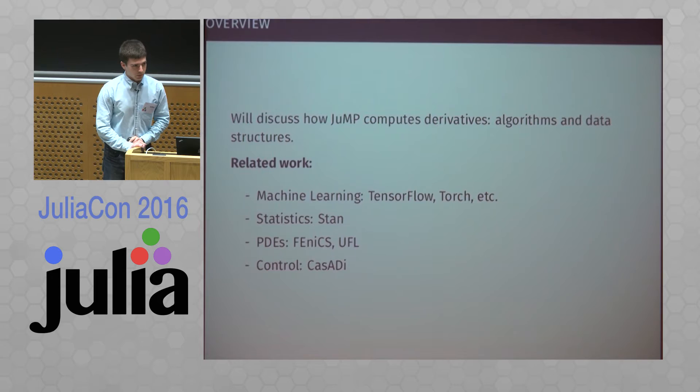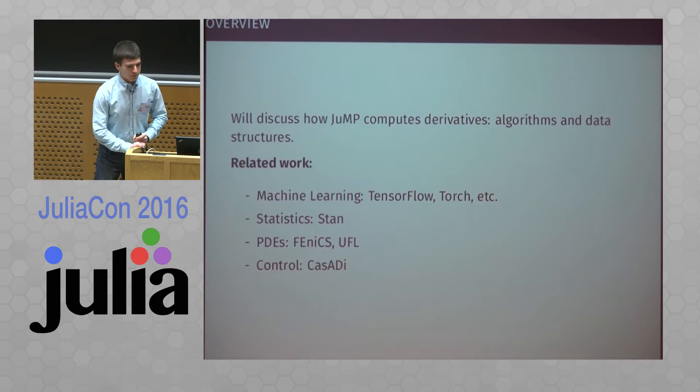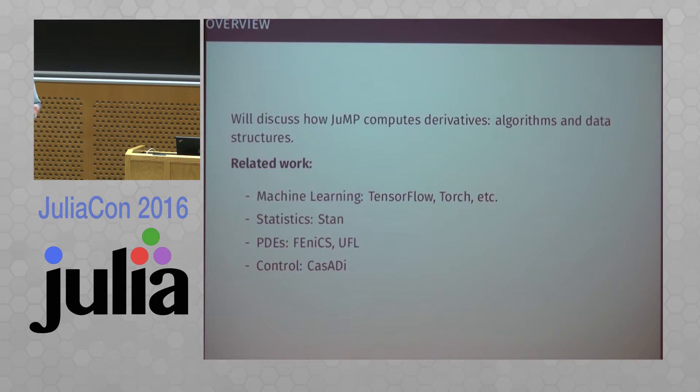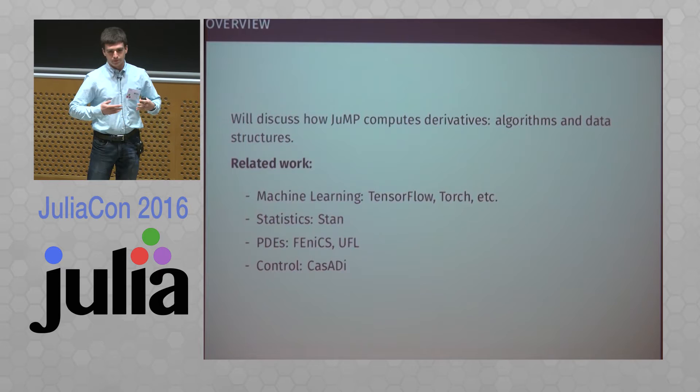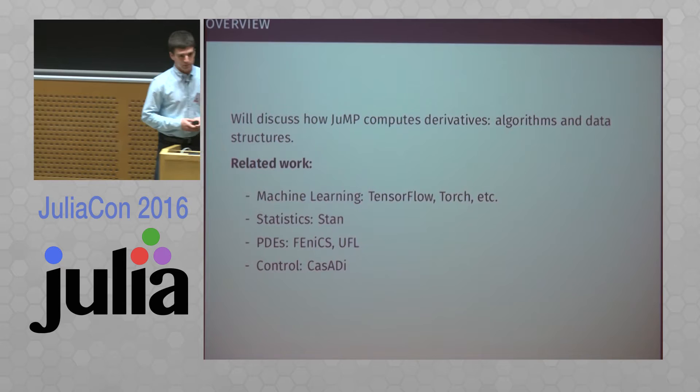In this talk, I want to discuss what happens between JuMP, ReverseDiff sparse, ForwardDiff, and the solver — specifically, how JuMP goes about providing those derivatives. We'll use a set of techniques called automatic differentiation, which has been taken up recently by the machine learning community and is a big part of packages like TensorFlow. It's also used in statistics, PDEs, and control problems. I'll present the algorithms and data structures we use inside JuMP, showing one way to implement automatic differentiation in Julia or other languages.